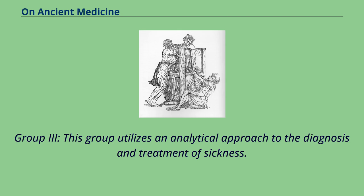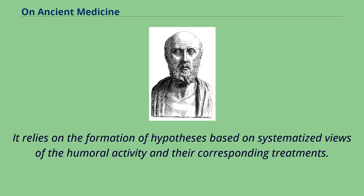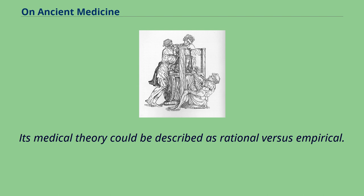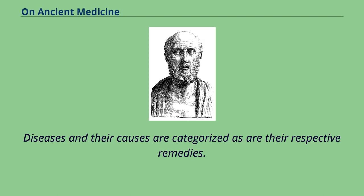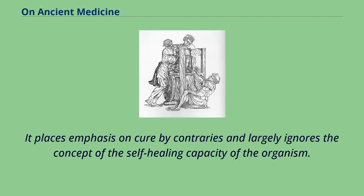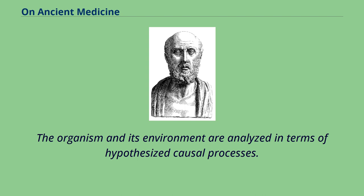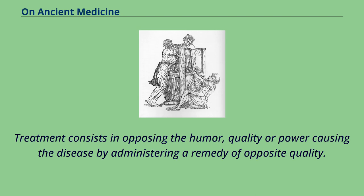Group 3 utilizes an analytical approach to the diagnosis and treatment of sickness. It relies on the formation of hypotheses based on systematized views of humoral activity and their corresponding treatments. Its medical theory could be described as rational versus empirical. Diseases and their causes are categorized, as are their respective remedies. It places emphasis on cure by contraries and largely ignores the concept of the self-healing capacity of the organism. The organism and its environment are analyzed in terms of hypothesized causal processes, with treatment consisting in opposing the humor, quality, or power causing the disease by administering a remedy of opposite quality.